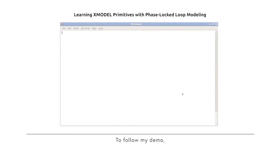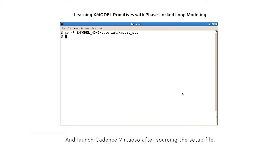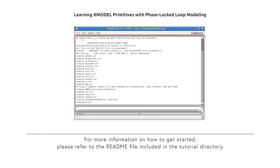To follow my demo, first copy the X-Model PLL tutorial directory included in your X-Model installation to your local directory, and launch Cadence Virtuoso after sourcing the setup files. For more information on how to get started, please refer to the readme file included in the tutorial.